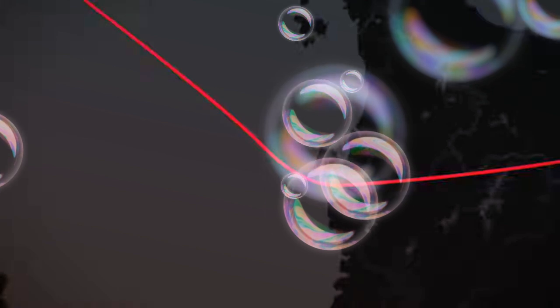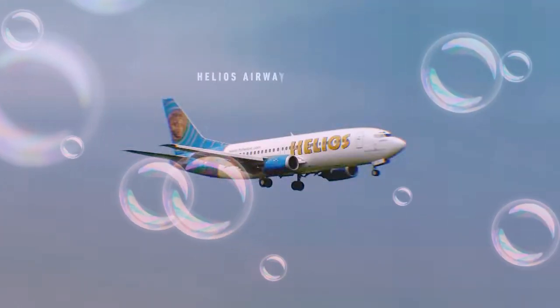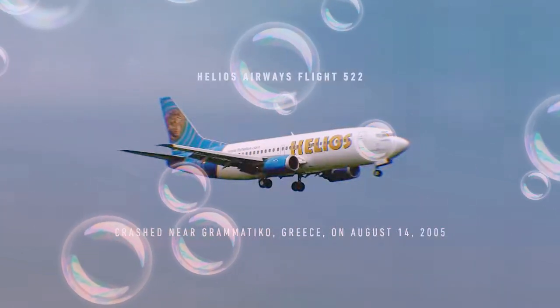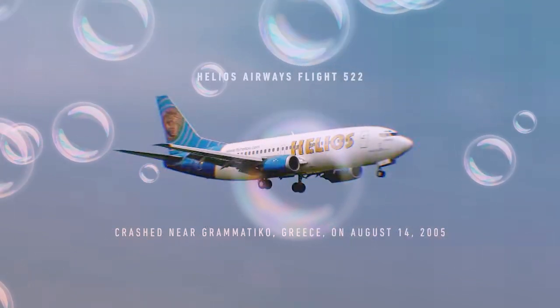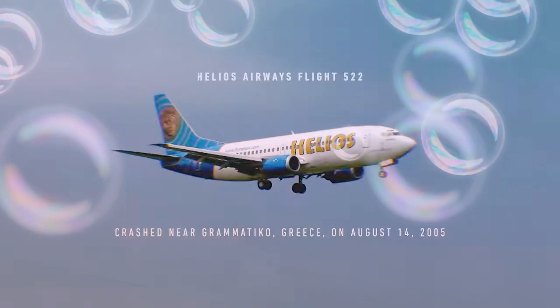Some have theorized the crew might have been incapacitated by a sudden or gradual loss of cabin pressure. For instance, when Helios Airways Flight 522 failed to pressurize in August of 2005, the pilots quickly fell unconscious. Yet the aircraft continued to fly on autopilot for more than two hours until it ran out of fuel. Airline pilots are trained for such an event. In the event of cabin depressurization, an automatic system is designed to deploy oxygen masks to give the pilots enough time to perform an emergency descent to a more breathable altitude.